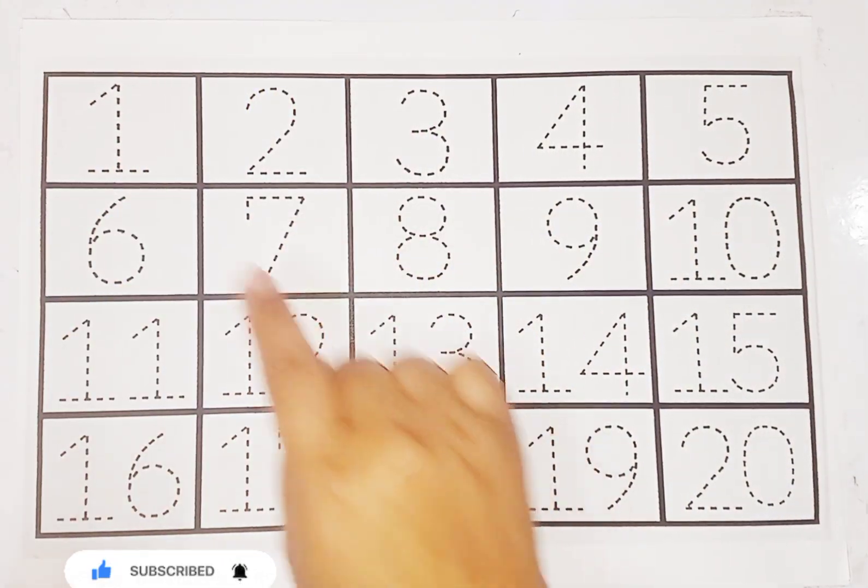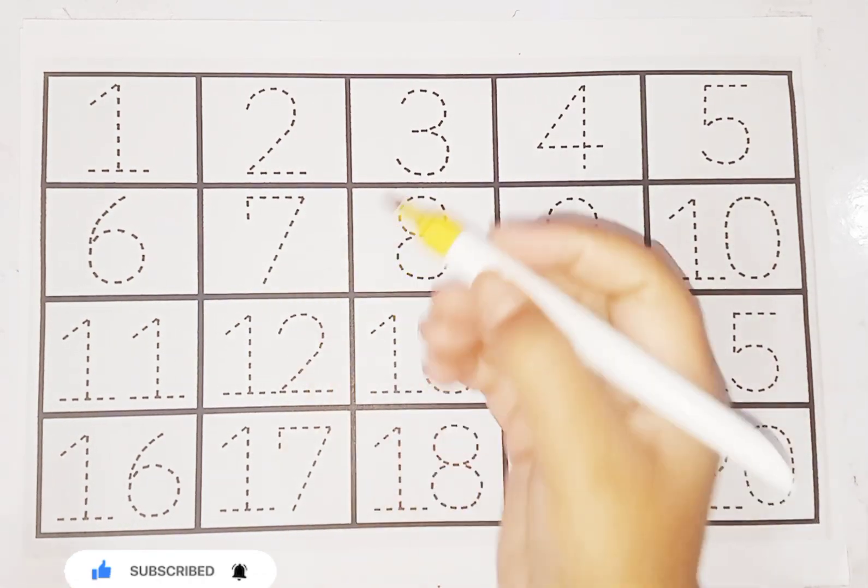So kids, today we learn counting 1 to 20. Let's start the yellow color.